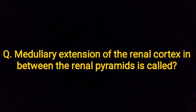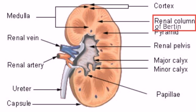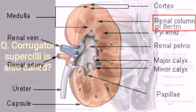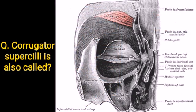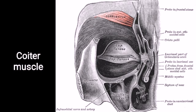Medullary extension of the renal cortex in between the renal pyramids is called the renal column of Bertin. Corrugator supercilii is also called the Coiter muscle.